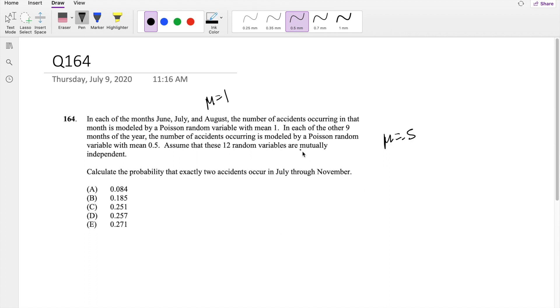Assuming the 12 random variables are mutually independent, we're looking for the probability that exactly two accidents occur in July, August, September, October, and November. So this equals 2. We first have to look at the 5 months they give you, and we know these 5 months are mutually independent.